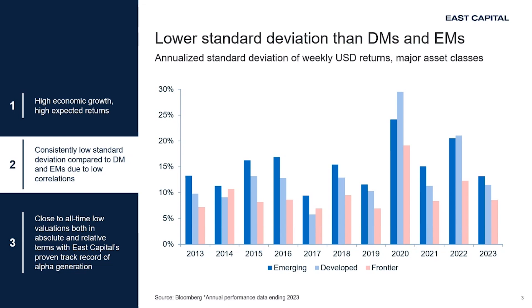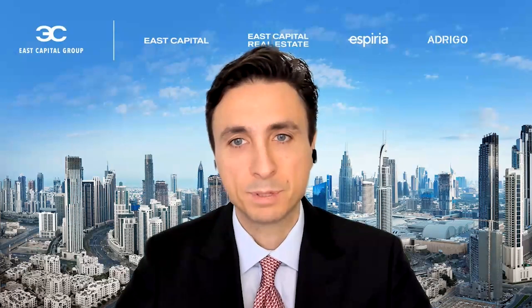You have fast economic growth structurally driven by demographics and reforms. If you're not familiar with the investment universe, this is the most surprising aspect about frontier markets: you have lower standard deviation compared to emerging and developed markets. Frontier markets, due to low correlations among all these markets, have even lower standard deviation and typically leading to lower drawdowns when it comes to times of volatility.